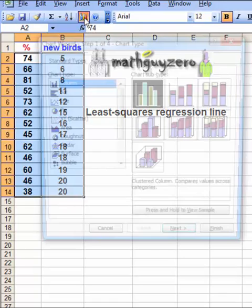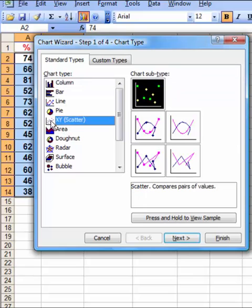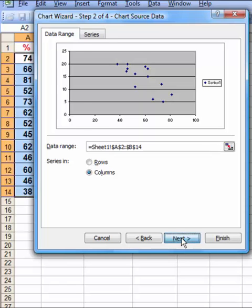Go to your chart wizard. You need to use the scatter plot function. Click next. There's your scatter plot. Click next.